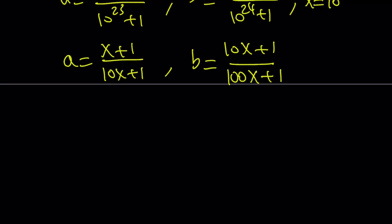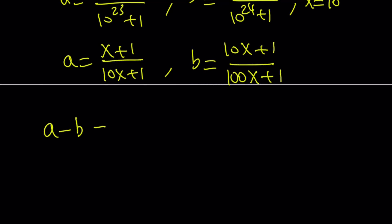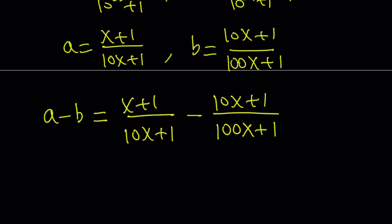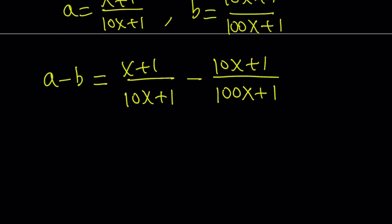So we're going to start by comparing or looking at a minus b, which is (x + 1)/(10x + 1) minus (10x + 1)/(100x + 1). So we're going to make a common denominator and simplify this expression.